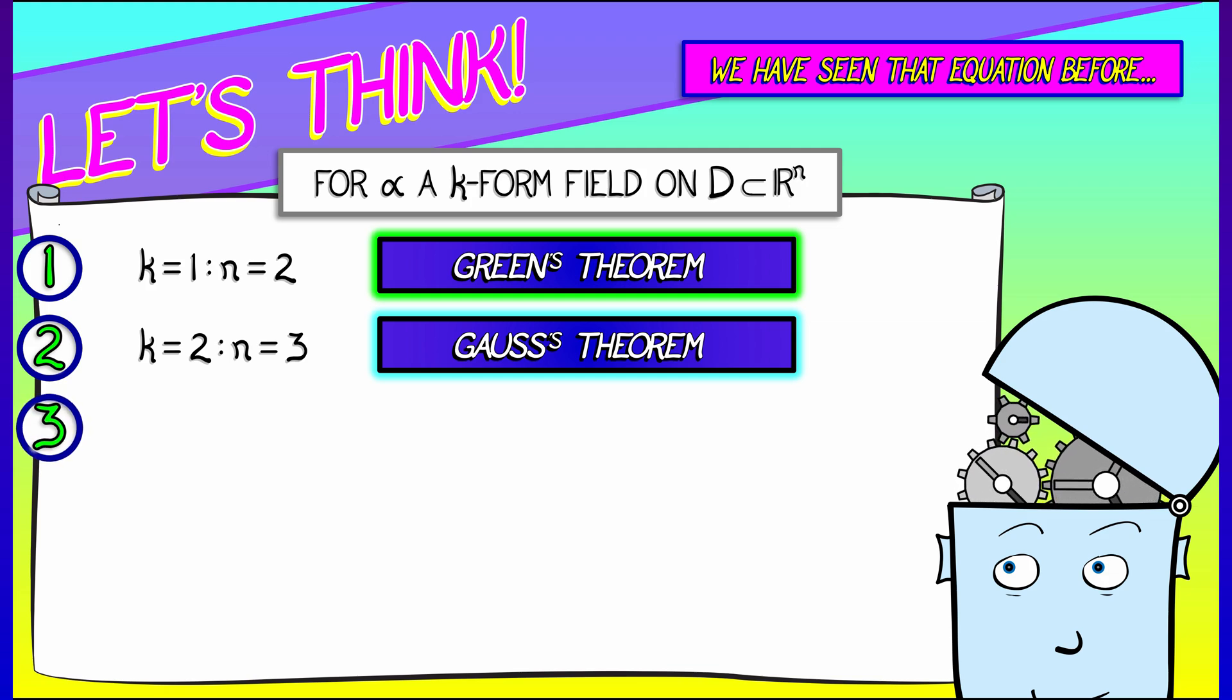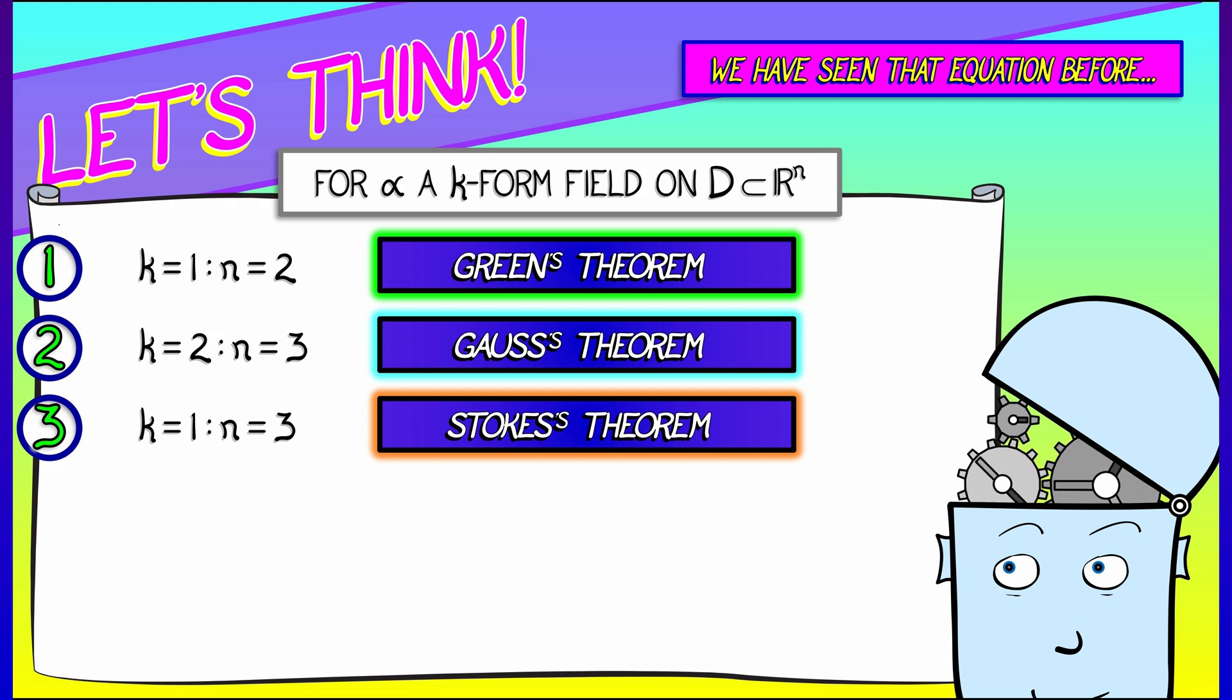In the case where k equals 1 but n equals 3, that is the classical Stokes' Theorem. So we've got Green, Gauss, Stokes.